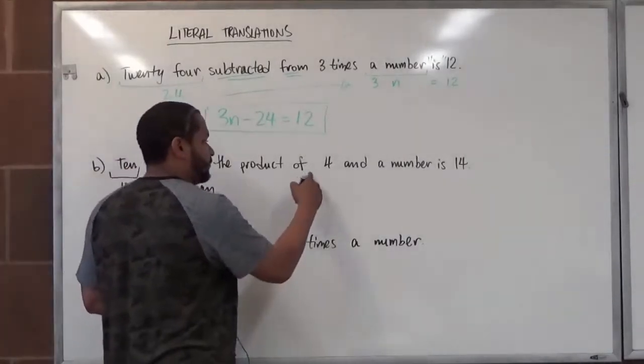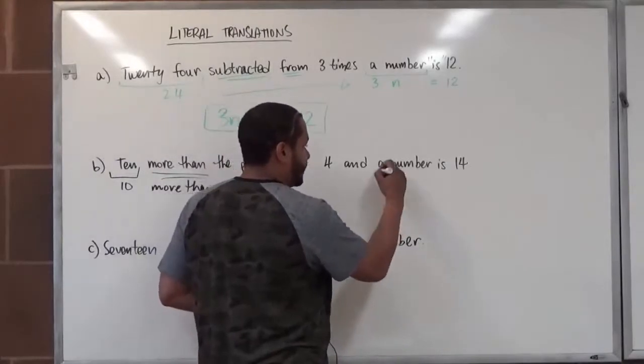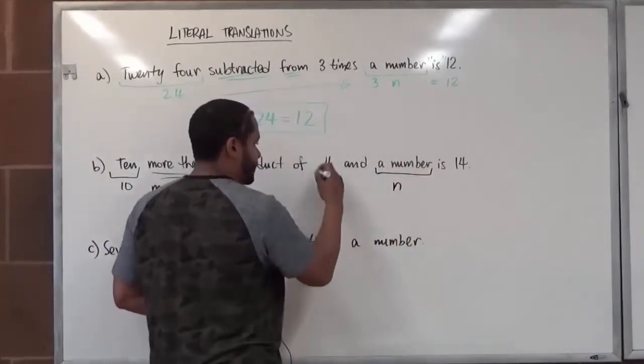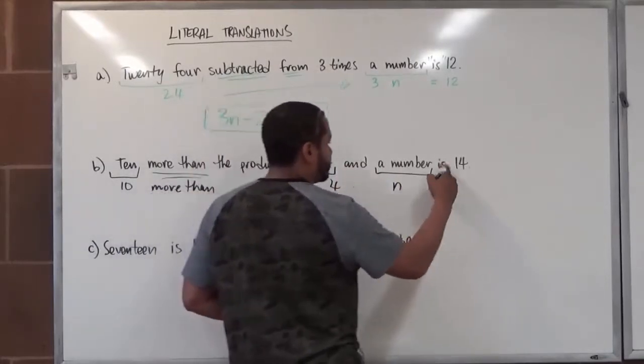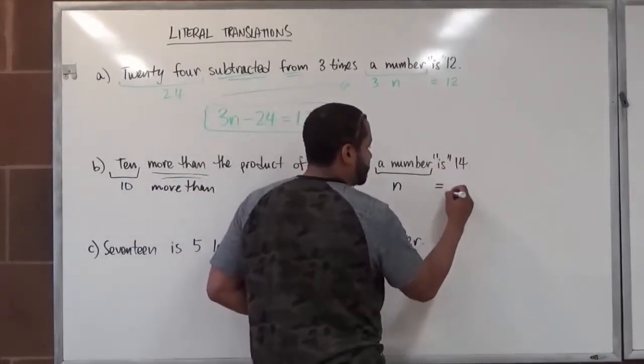The product of 4 and the number, again, a number, we'll just use the letter n, and the number here is 4. So, 4 times n is, which is, equals 14.